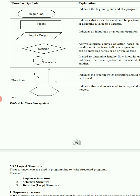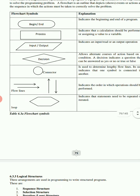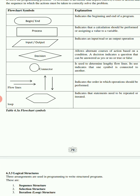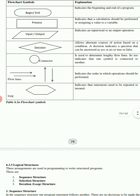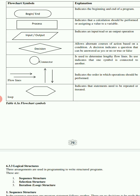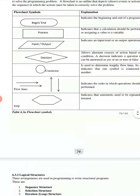The next symbol is the parallelogram. You use this when you need to ask the user to input any data, or when the computer needs to input data. Input is whatever you need to enter into the program, and output is whatever is displayed or whatever you want the user to see. Decision is when you make the program decide on a certain answer - it indicates a question that can be answered yes or no, or true or false.